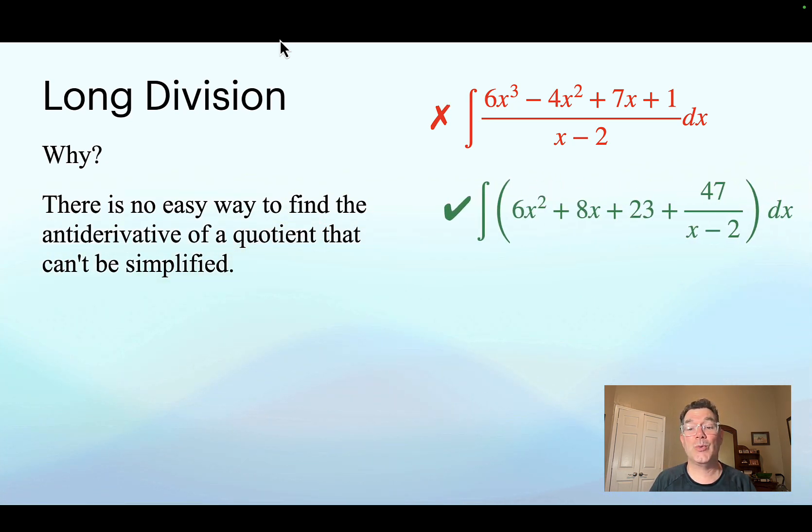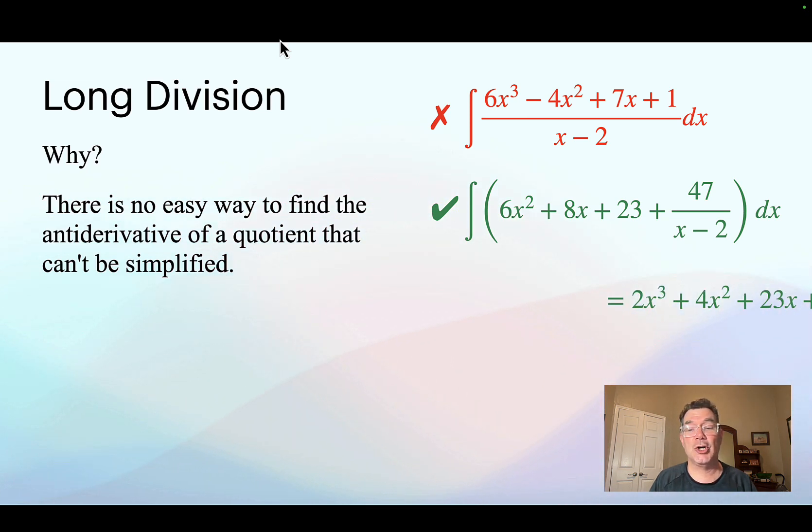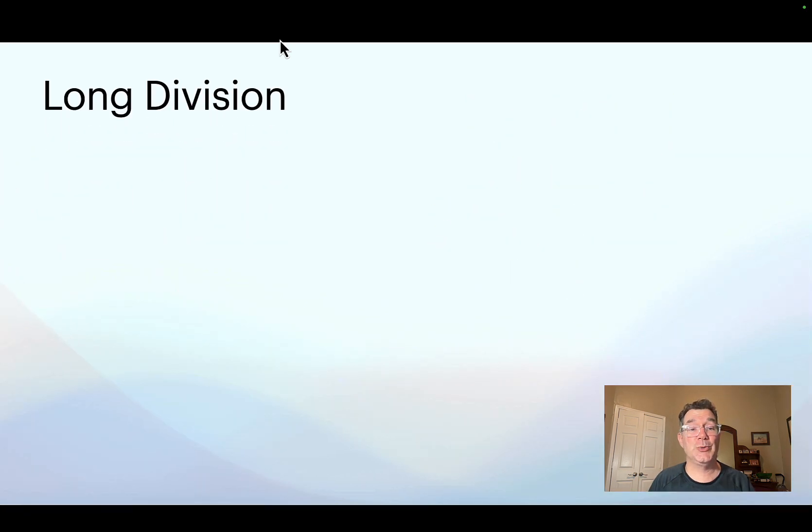So if I rewrite it like 6x squared plus 8x plus 23 plus 47 over x minus 2, then I can find the antiderivative of it just term by term and get 2x cubed plus 4x squared plus 23x plus 47 times the natural log of x minus 2 plus c. So that's what we're trying to do with this.